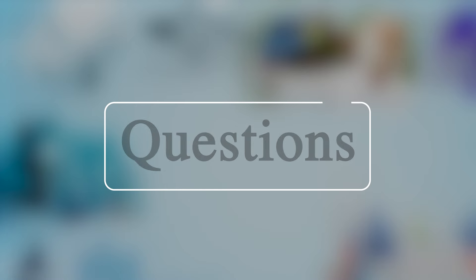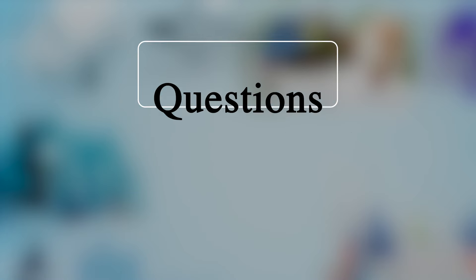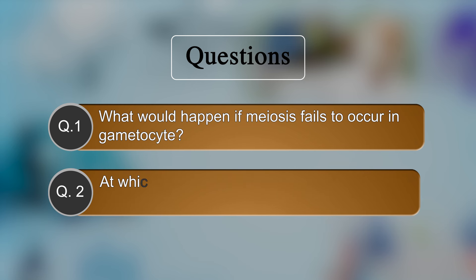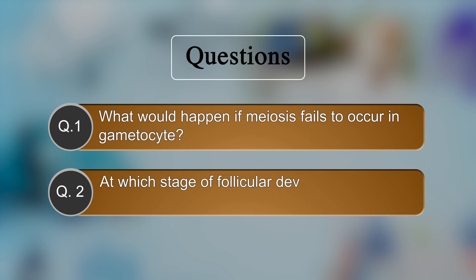Now let us answer some questions. What would happen if meiosis fails to occur in a gametocyte? At which stage of follicular development is the ovum released?